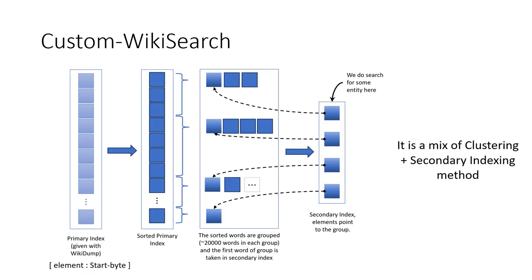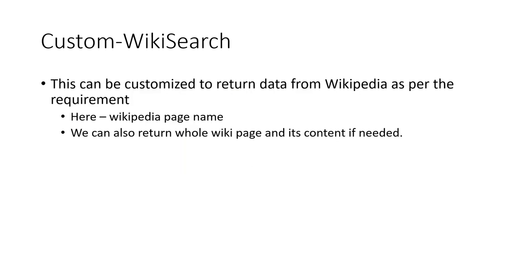The schematics of our wiki search work as follows. We took the primary index provided with the wiki dump, which contains element and start byte information. We sorted the primary index and grouped about 20,000 words per group, taking the first word of each group to form a secondary index list. Search is performed on this final list using a clustering and secondary indexing approach from databases. When an entity is found, only the required portion of Wikipedia is extracted, optimizing performance. The return of the wiki search can be customized — here we only return the wiki page name, but full page content can also be returned if needed.